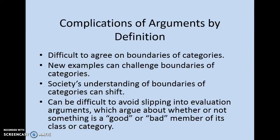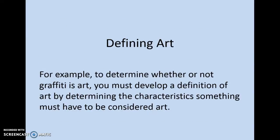Later I'll talk about the significance of the Supreme Court — we know that people disagree on whether we should change the meaning of certain amendments and what we think is acceptable. Something else that's difficult is avoiding slipping into evaluation arguments, which argue about whether something is a good or bad member of its class or category. Let's look at art as an example to make this concrete.